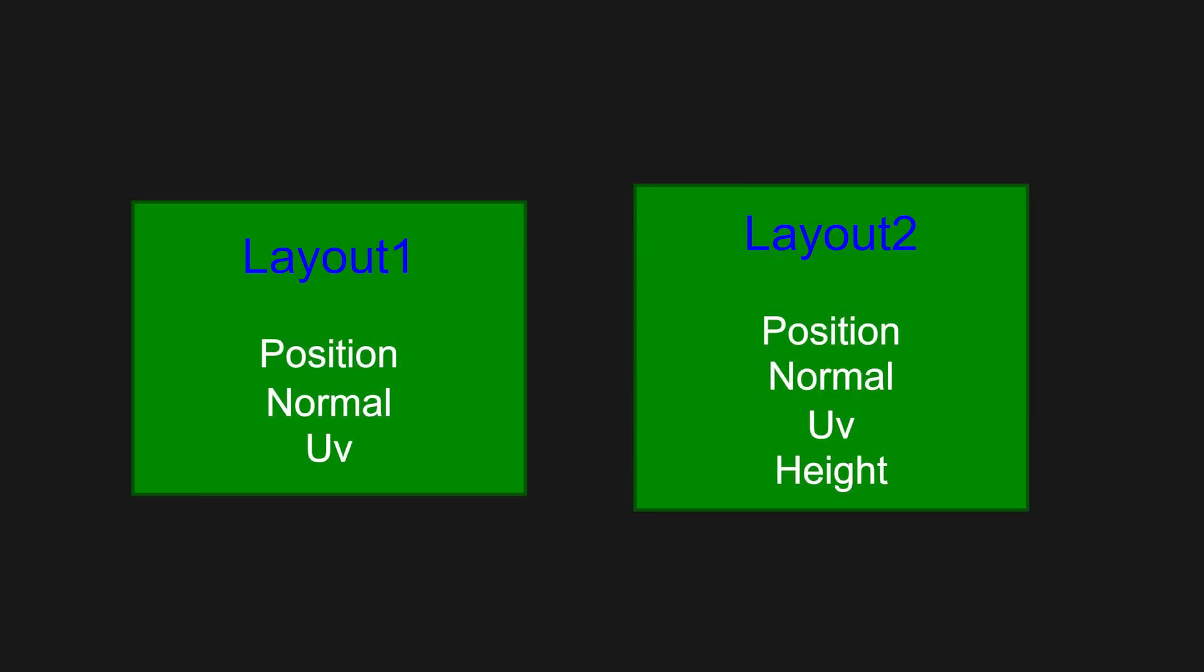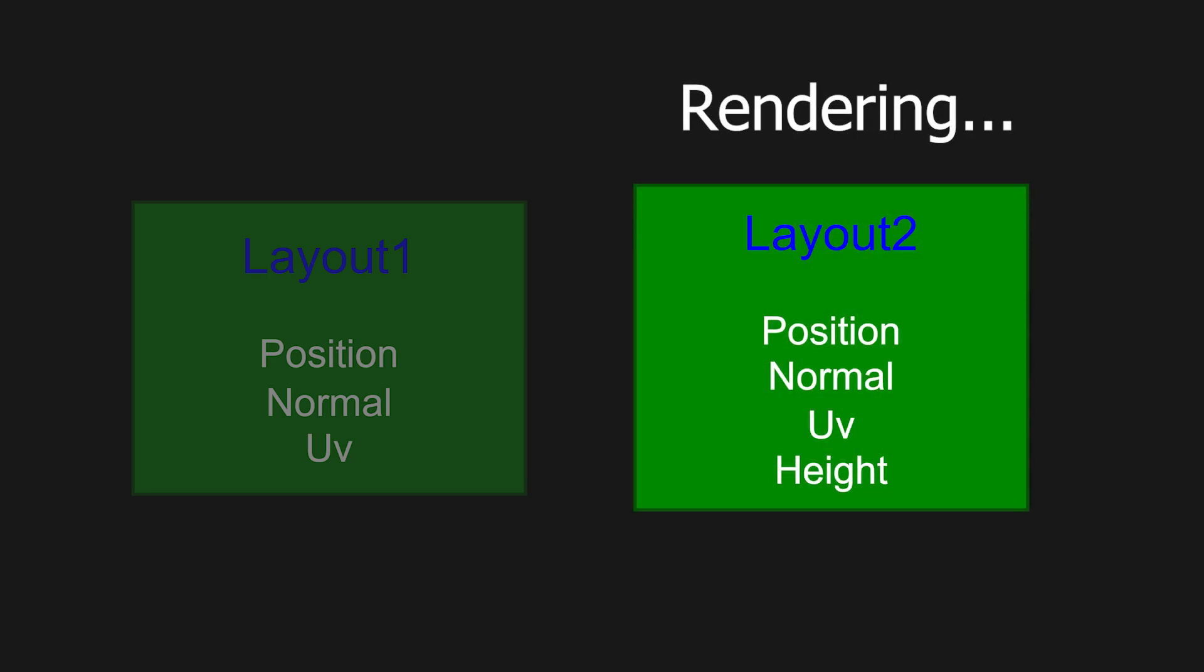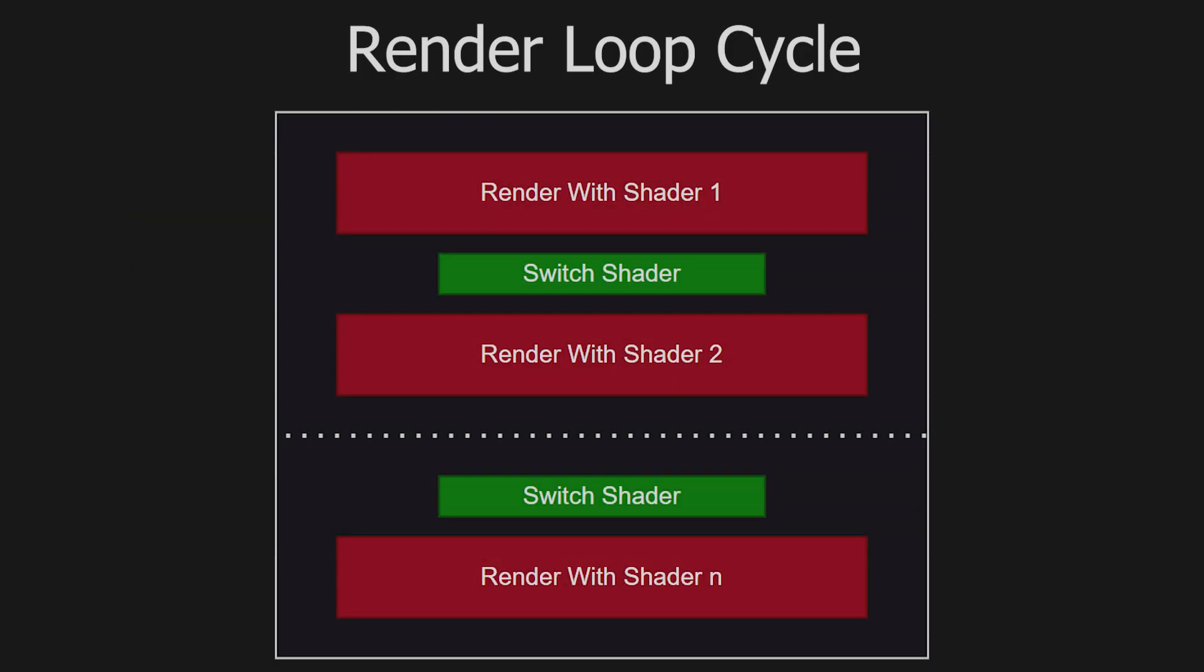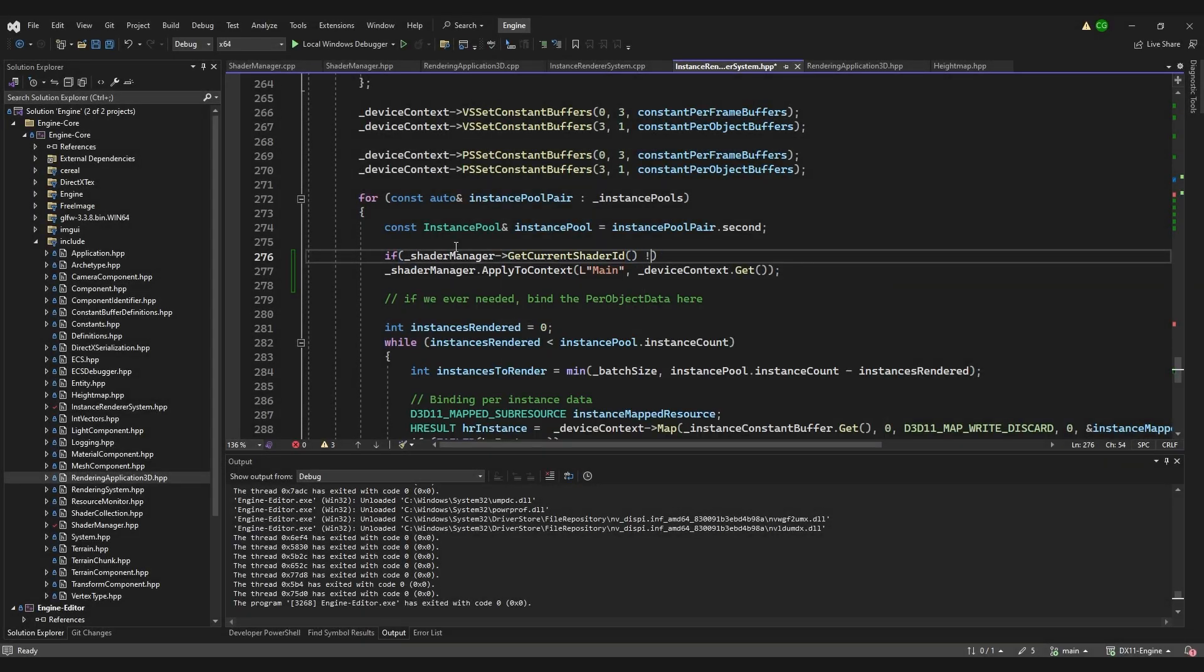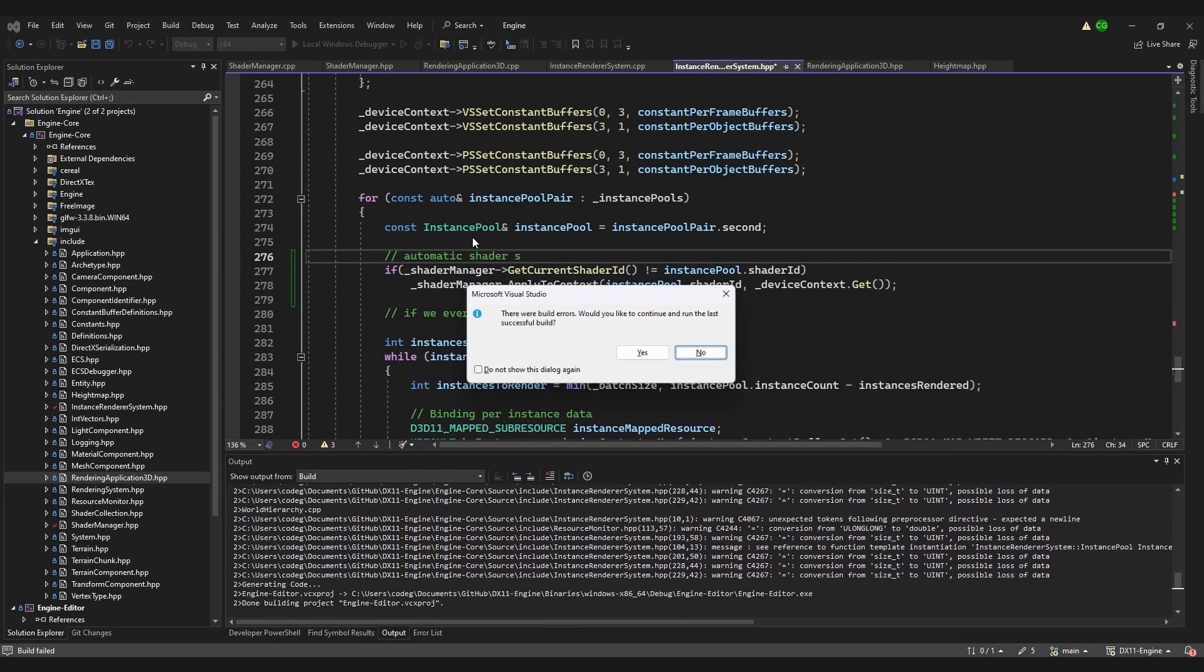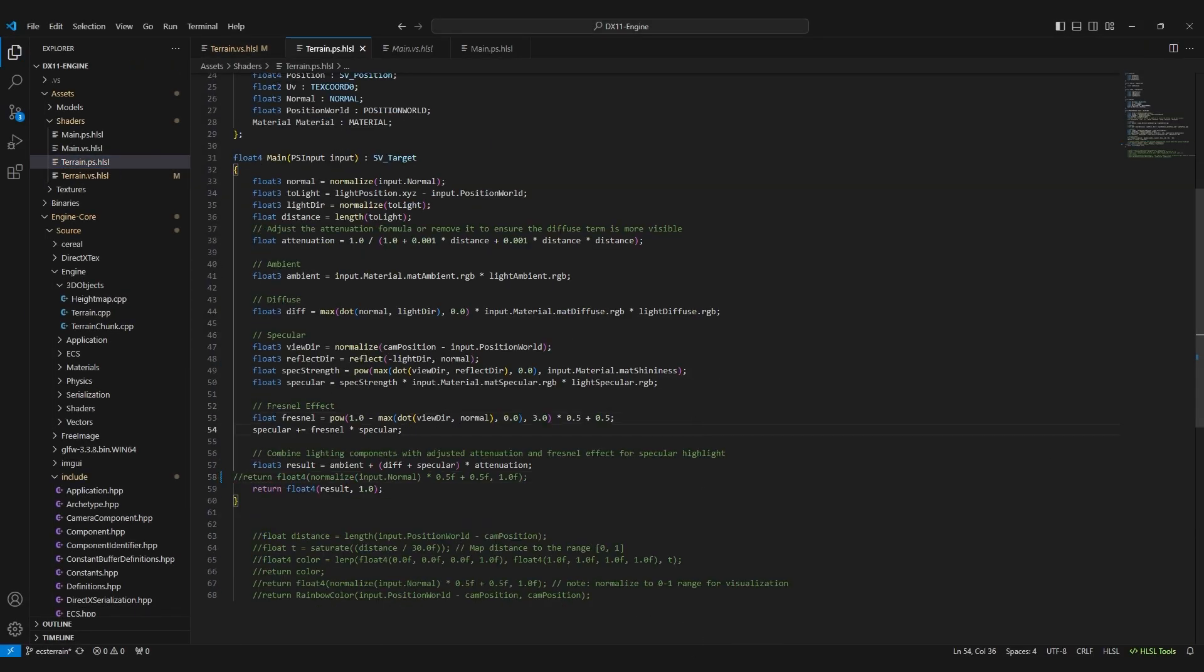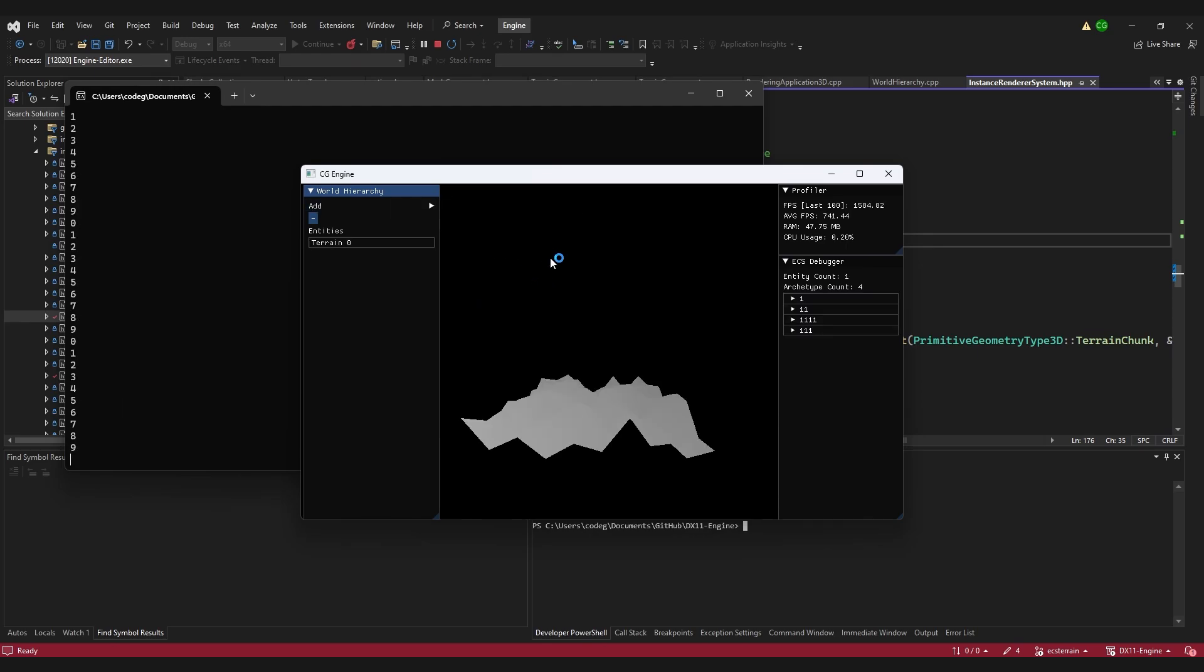When you want to render using different layouts, you render one type of geometry, switch the shader, render another type of geometry, and so on. We do the switching each frame. Pretty cool. Anyway, I implemented the shader switching and created a new vertex layout that has a height attached to it. Created a 2D array of random heights, wrote a new shader that uses these heights, and the result I got is this.